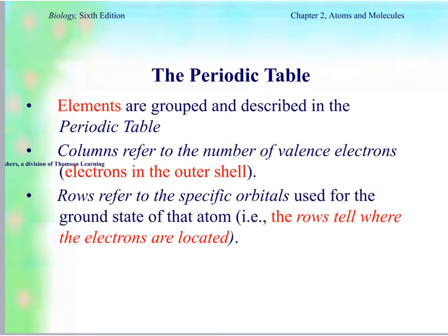All of the elements are grouped and organized in the periodic table. If you're looking at the columns going down, that refers to the number of valence electrons — these are the electrons in the outer shell. The rows refer to the orbitals used for the ground state of the atom; in other words, the rows tell where the electrons are located. We will be looking at this in class.